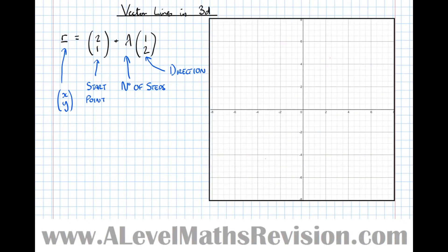So let's have an example using this grid here. This vector equation says that we start at the point (2,1). So let's mark the point (2,1) on our grid. There it is there, (2,1).